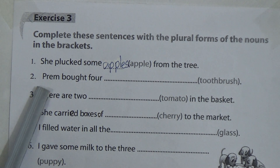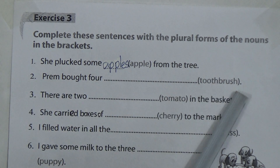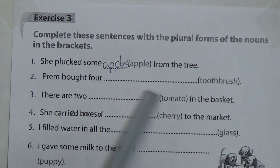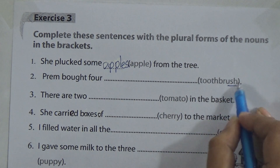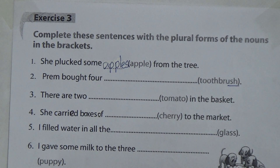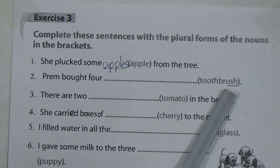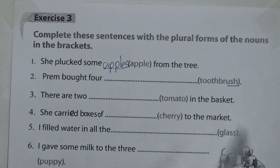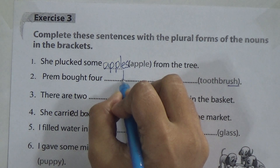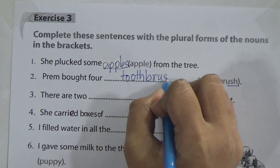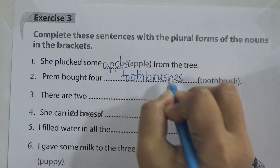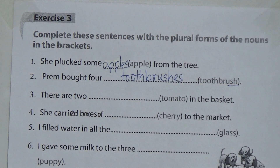Number two: Prem bought four _toothbrush_. We will make it plural. Look at the end of this word — there is SH. We know that when we find SH, we will add ES to make it plural. So it will be toothbrushes — T-O-O-T-H-B-R-U-S-H-E-S. We add ES when the noun ends in SH.